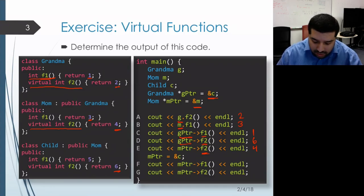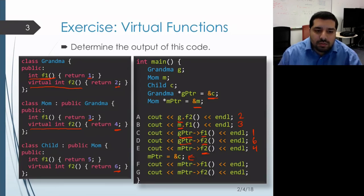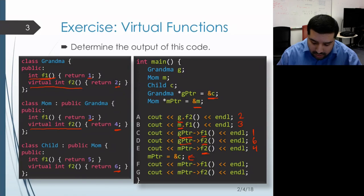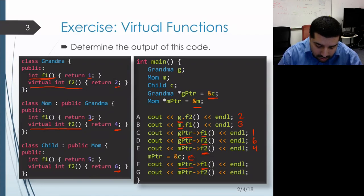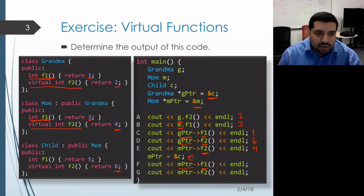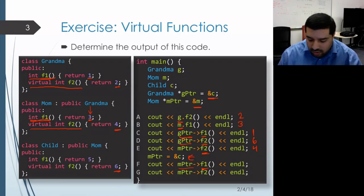On the next line, we'll actually change the dynamic type of the object that m pointer is pointing at. Now it's actually going to be pointing at a child object. So whenever we call a member function through m pointer, the dynamic type of the receiver will be child as opposed to mom. Looking at the next line, we're calling F1 through m pointer. F1 is not virtual, so that means we get static binding. The static type of the receiver is mom, so we're actually going to get the mom version called, which returns three. So we get the value three printed out.